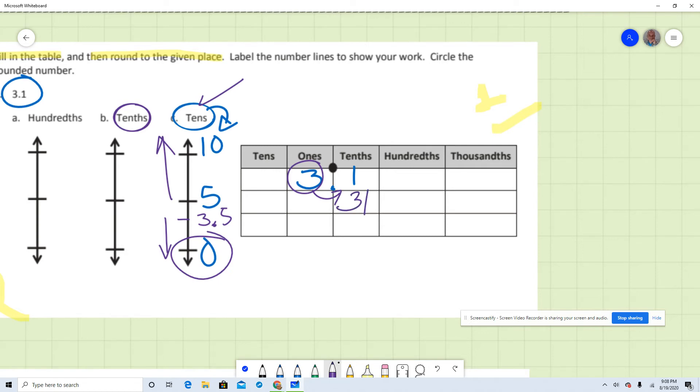Now, if this is 31 tenths, 31 tenths is between 30 and 40 tenths.